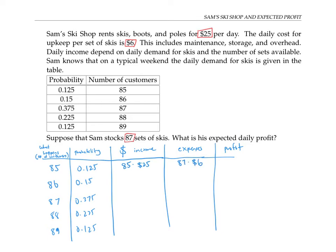And so his profit will be the difference: 85 times 25 minus 87 times 6. A similar thing happens if he gets 86 customers one day. So that will have an income of 86 times 25, expenses of 87 times 6, and a profit of the difference.